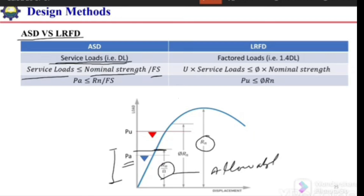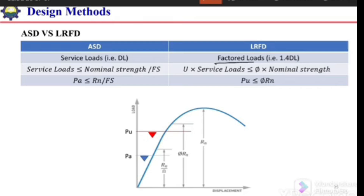In case of LRFD, we factor the service loads — we apply a factor of safety on the applied service loads and then compare with the nominal strength. We increase the service load by multiplying it with a load factor, and we also reduce the nominal strength by multiplying it with the strength reduction factor phi. This term, phi times nominal strength, is termed the design strength, and the factored load should be less than the design strength.